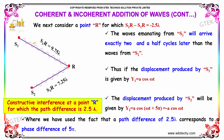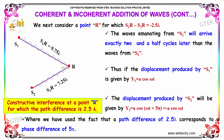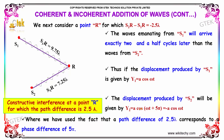We next consider a point R for which S2R minus S1R equals minus 2.5 lambda. The waves emanating from S1 will arrive exactly two and a half cycles later than the waves from S2. Thus, if the displacement produced by S1 is given by Y1 = A cos(ωt) and the displacement produced by S2 is given by Y2 = A cos(ωt + 5π), which equals minus A cos(ωt).